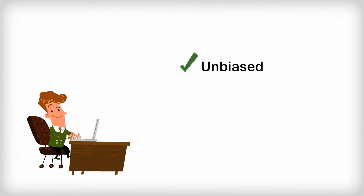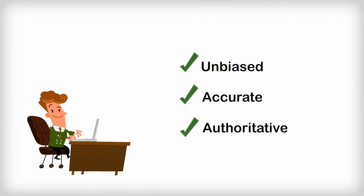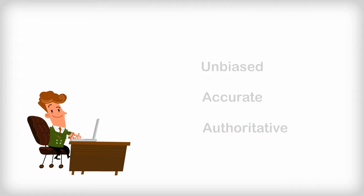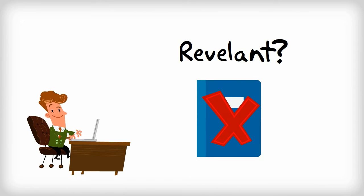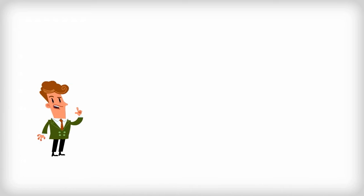An article can be unbiased, accurate, and authoritative, but if it isn't relevant to your topic and doesn't answer your research questions, you shouldn't use it. Here are some things you should keep in mind when determining whether or not a source is relevant.